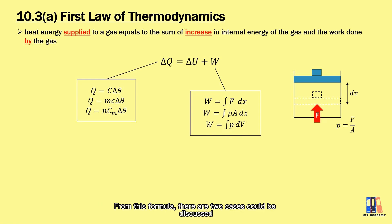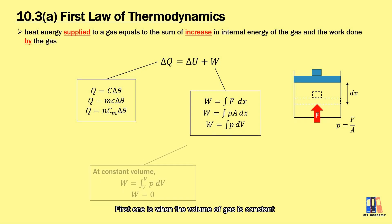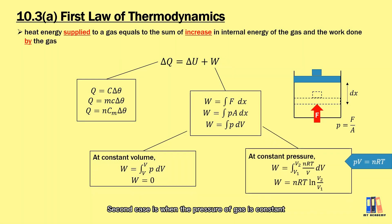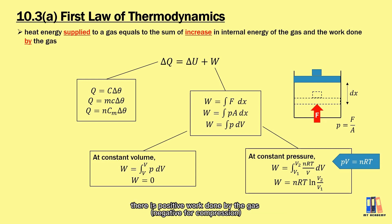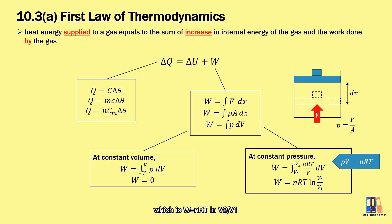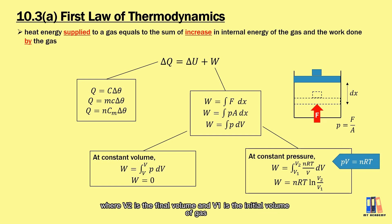From this formula, two cases can be discussed. The first is when the volume of gas is constant — since there is no change in volume, there is no work done by the gas. The second case is when the pressure of gas is constant. When the gas undergoes expansion, there is positive work done by the gas. Here we apply PV = nRT to replace pressure in the equation, and obtain another formula for work done: W = nRT ln(V2/V1), where V2 is the final volume and V1 is the initial volume.